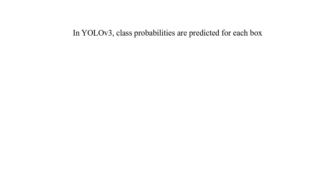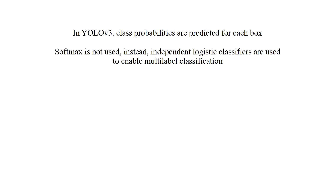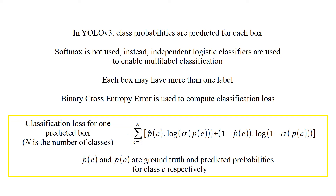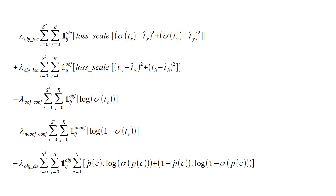In YOLO version 3, class probabilities are predicted for each box. Different from YOLO version 2, softmax is not used. Instead, independent logistic classifiers are used to enable multi-label classification, so each box may have more than one label. Binary cross entropy error is used to compute classification loss. This is the classification loss for one predicted box. Capital N is the number of classes. P-hat of C and P of C are ground truth and predicted probabilities for class C respectively.